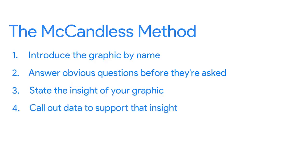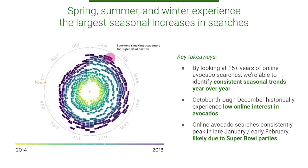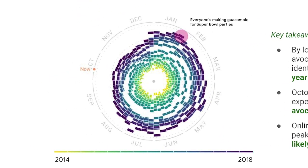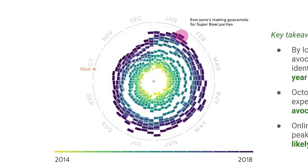The fourth step in the McCandless method is calling out data to support that insight. This is your chance to really wow your audience, so give as many examples as you can. With our avocado graphs, it might be worth pointing to specific examples. In our monthly trends graph, we can point to specific weeks. During the week of November 25, 2018, the search score was around 49, but the week of February 4, the search score was 90. This shows the rise and fall of online search interest with the help of some of the very cool data in our graphs.